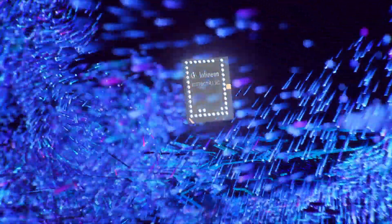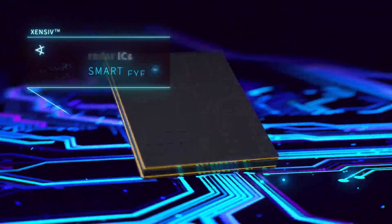Our eyes take in 10 million items of information per second. The Xensive radar sensors enable things to see.